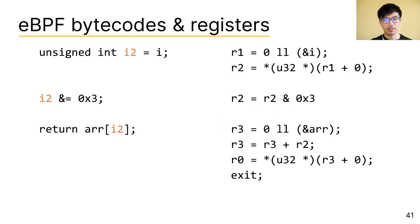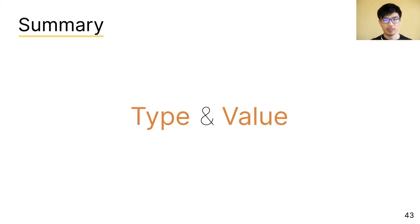So instead of variable i, the verifier deals with register r2, which is where the variable i is stored. And in that way, the verifier checks the type and value of eBPF programs to make sure they're safe.